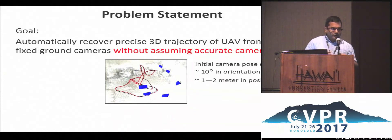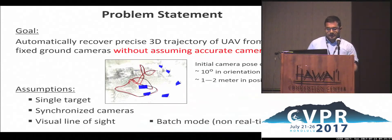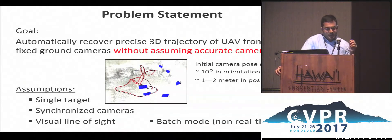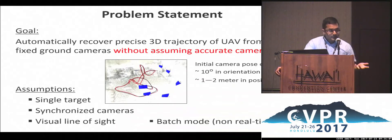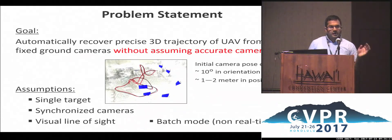We assume that we do not have any communication with the drone, and we also do not assume perfect camera calibration. Part of the work is to refine the camera calibration along with recovering the trajectory. We make a few assumptions: there is a single UAV in the space of interest, the cameras are synchronized, the UAV is in the line of sight of most cameras, and our current system operates in batch mode on archived videos — it's not yet real-time.